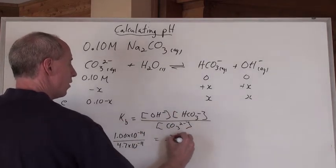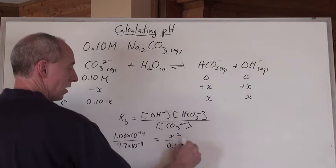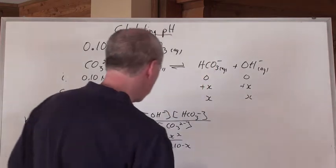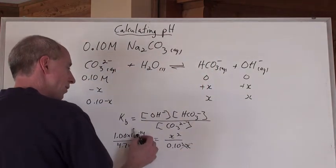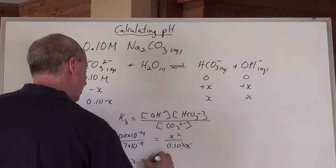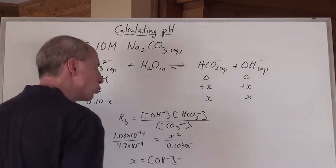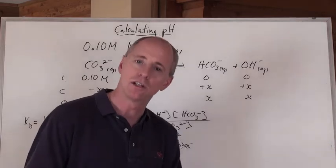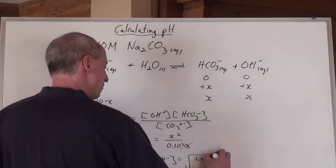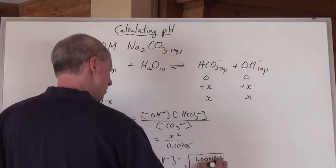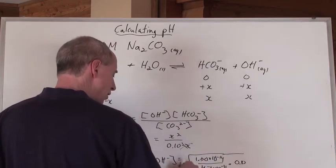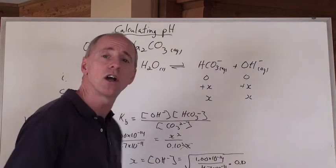And it's going to equal what? X squared over the concentration here, 0.10 minus X. Can you disregard that X when added to or subtracted from something? In the majority of these cases, you certainly can. So really, it's taking this number here, times 0.1, take the square root of that, and what does that equal? X. But X is going to be the concentration of the hydroxide ion in solution. So the square root of all of this, which is 1.00 times 10 to the negative 14, divided by 4.7 times 10 to the negative 11, all of that, and then times 0.1. So you take the square root of that number there, and you're going to get the hydroxide ion concentration.